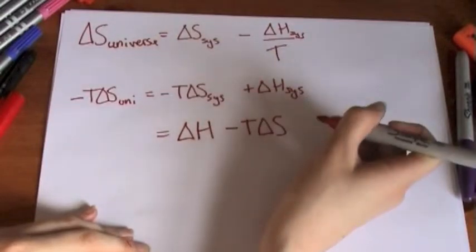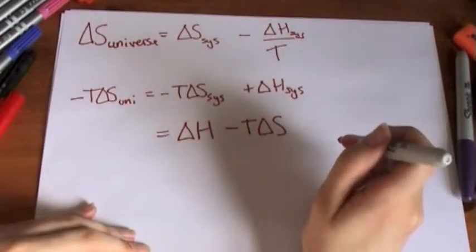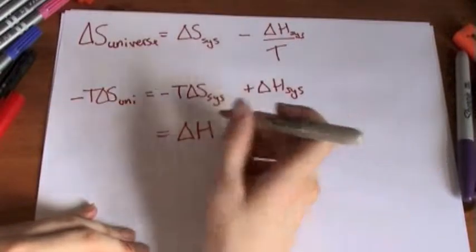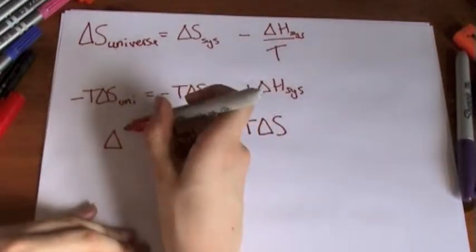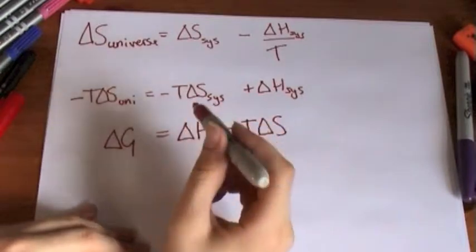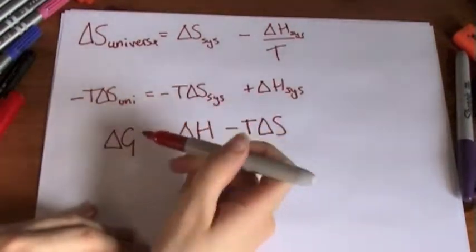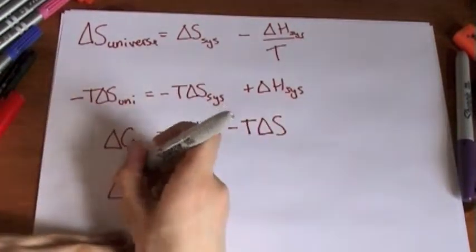So we can write this in another way, well, not really another way, so delta H minus T delta S. Some of you might be able to recognize that as Gibbs free energy.